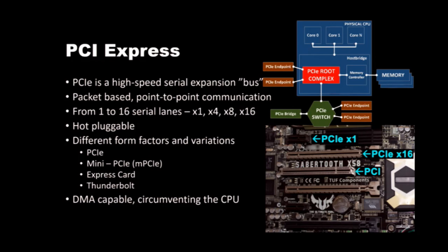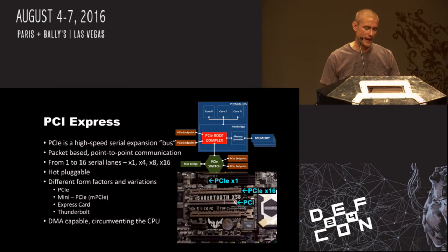Depending on how much bandwidth the device needs, it can consume between 1 and 16 serial lanes. A graphics card typically consumes 16 lanes. PCI Express is designed to be hot pluggable and comes in many form factors: the standard PCI Express, mini PCI Express, ExpressCards for laptops, and Thunderbolt also encapsulates PCI Express. What's nice from our point of view is that PCI Express is DMA capable — it circumvents the CPU cores so PCI Express endpoints can read and write memory directly.